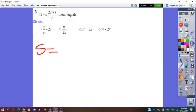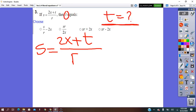If s equals 2x minus t over r, then t equals. So the variable will be t. The term in t, we have it here. But it's inside of a fraction.